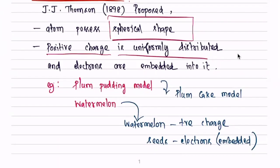The plum pudding model is like a plum cake. In that plum cake, you can put nuts over it. The sphere is the plum pudding, and the plum cake is the positive charge. The electrons are embedded into it like nuts embedded into the cake. The positive charge is the sphere, and the electrons are embedded inside.